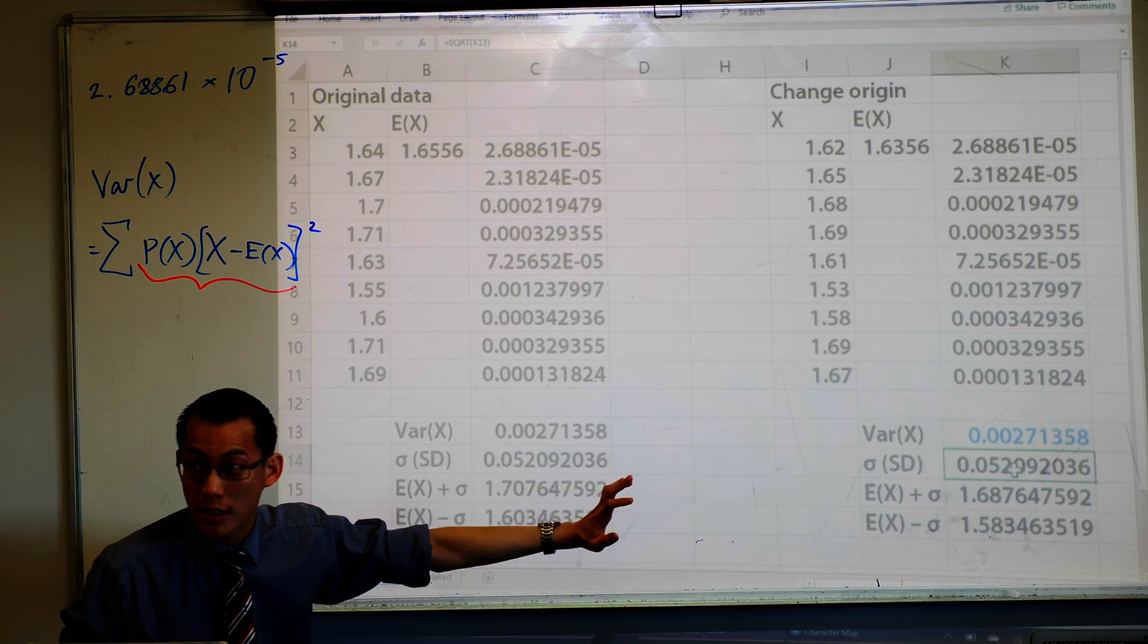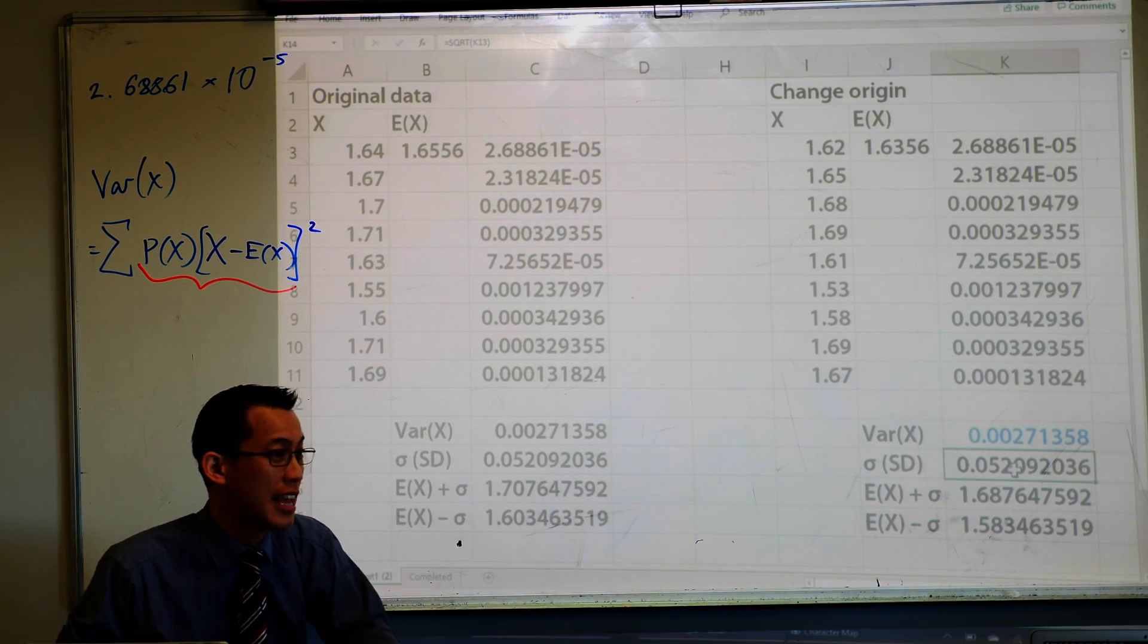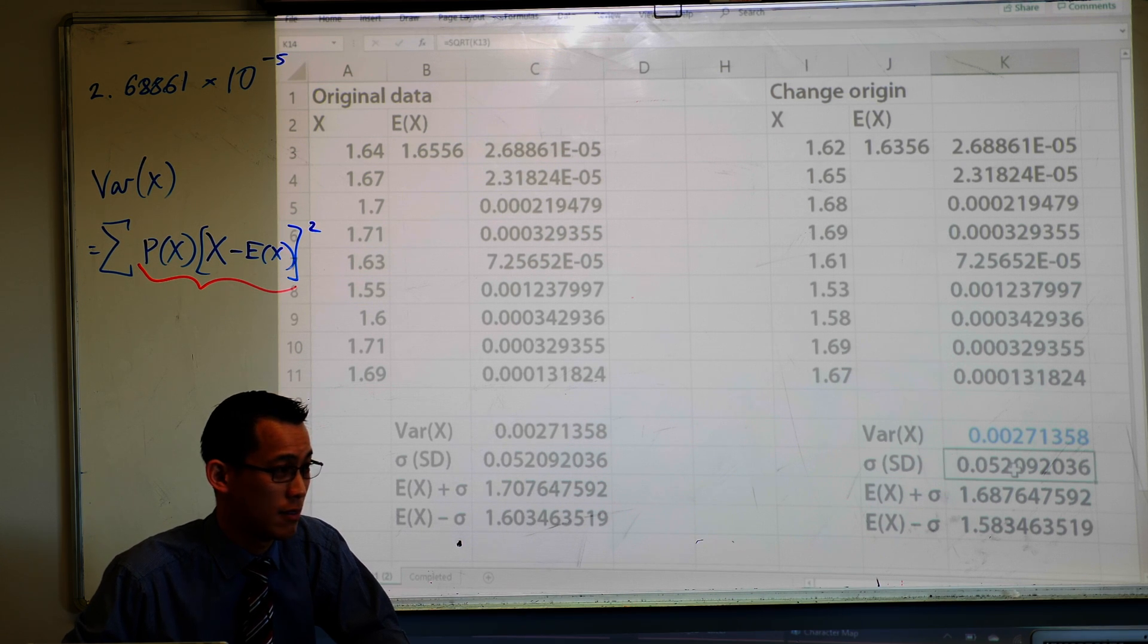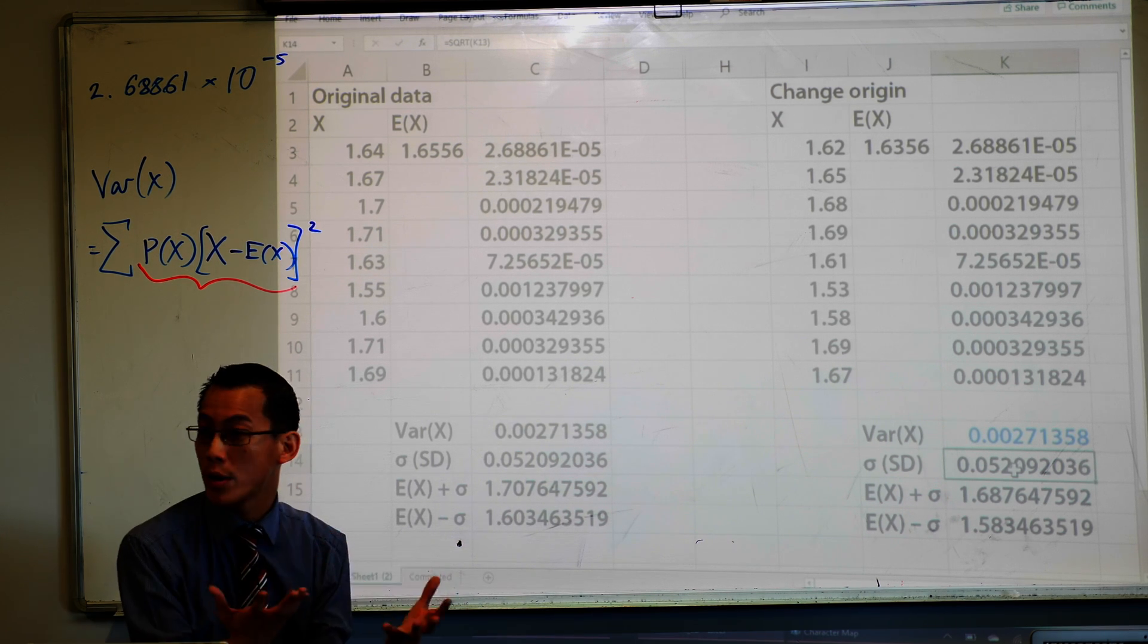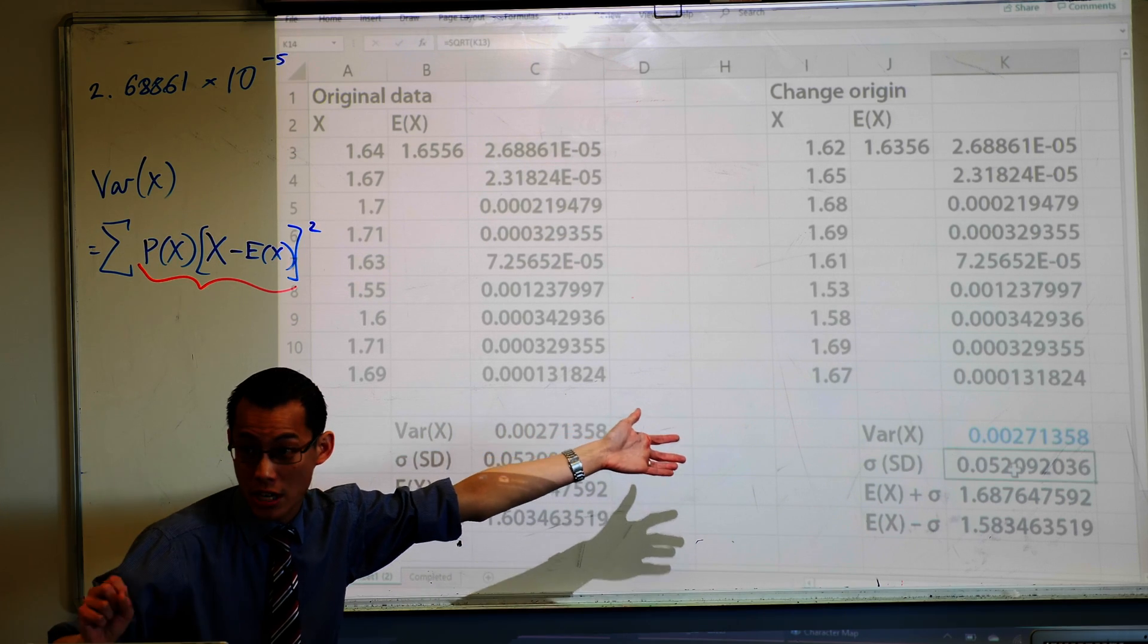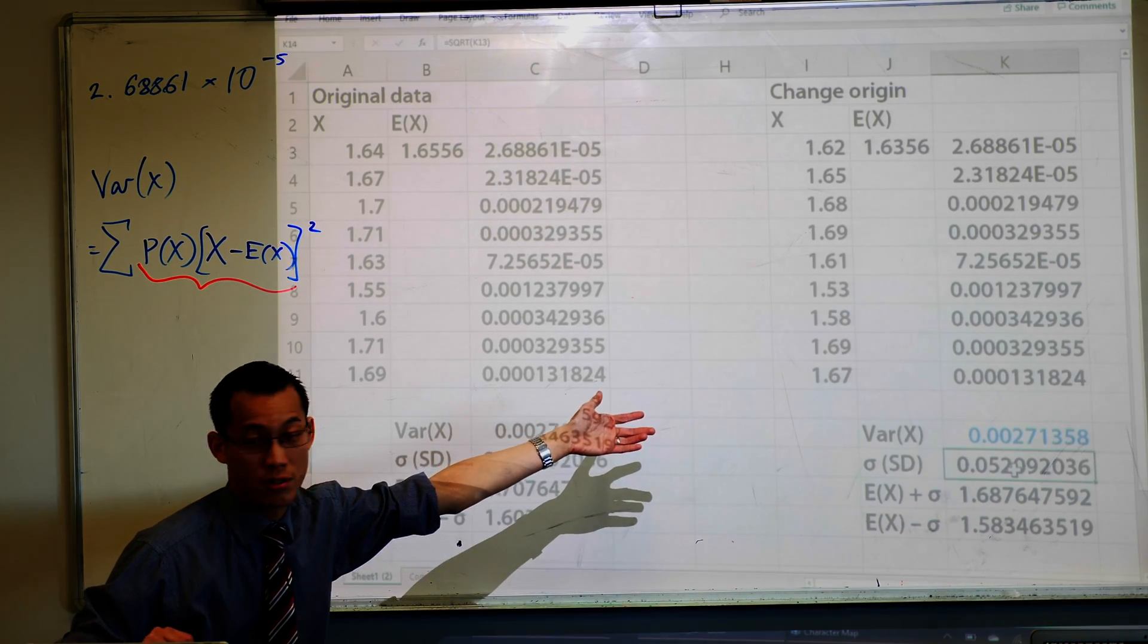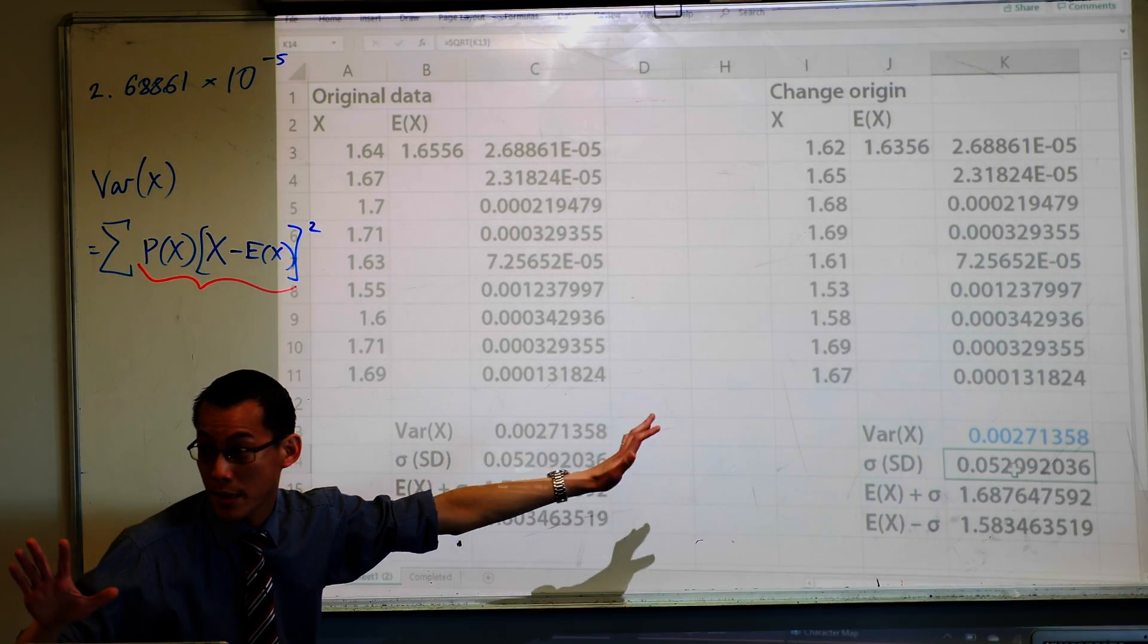Tell me now, without even looking at the number, tell me how much the standard deviation is going to change. It shouldn't change, right? Because standard deviation is the square root of the variance. We just established that the variance did not change. So therefore your standard deviation also should be the same. Does that make sense?